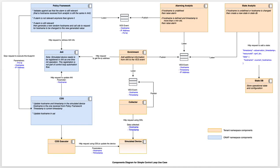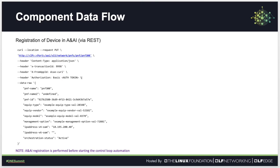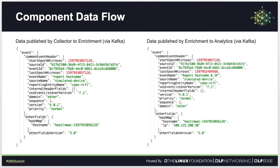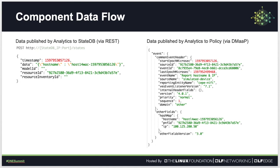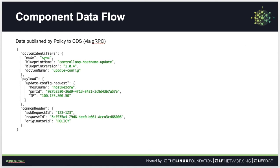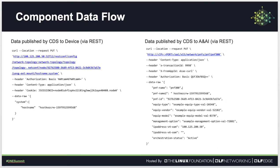That completes one iteration of the control loop flow for the use case, and the same will keep continuing while the automation is running. The next slide shows a more detailed view of the use case, mentioning the parameter path between components and the high-level logic of each component. The following slides show sample events exchanged by various components — starting from A&AI registration data published by collector to enrichment, enrichment to analytics, to State DB, analytic to policy, policy to CDS, CDS to device, and finally CDS to A&AI.